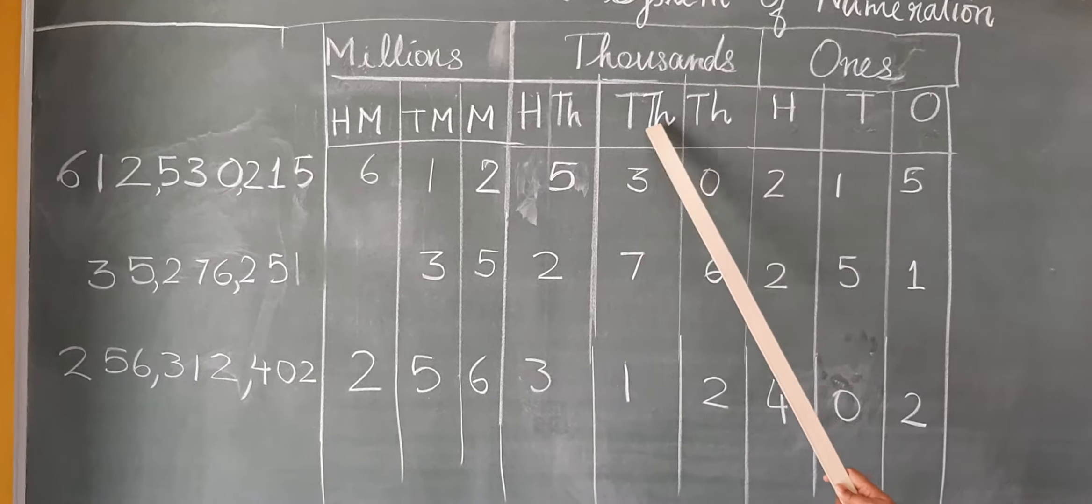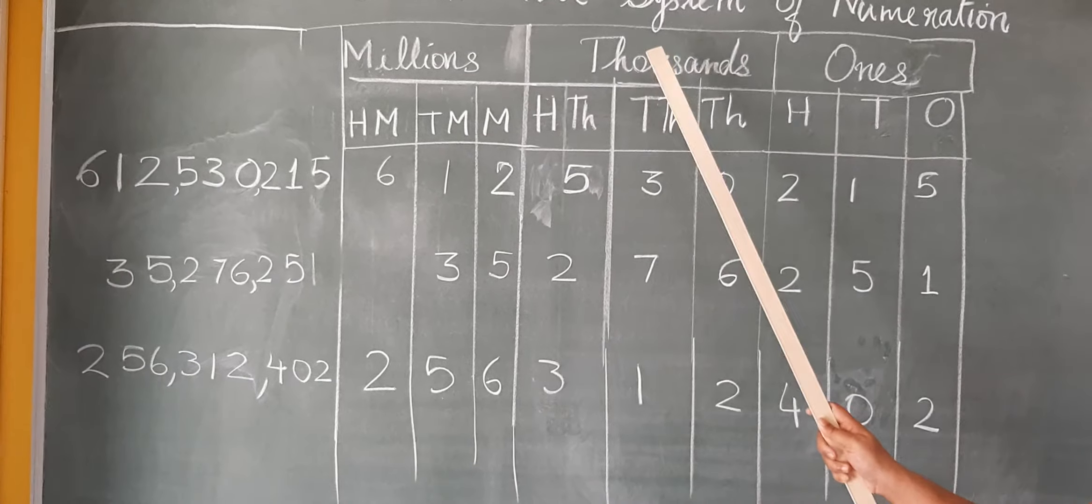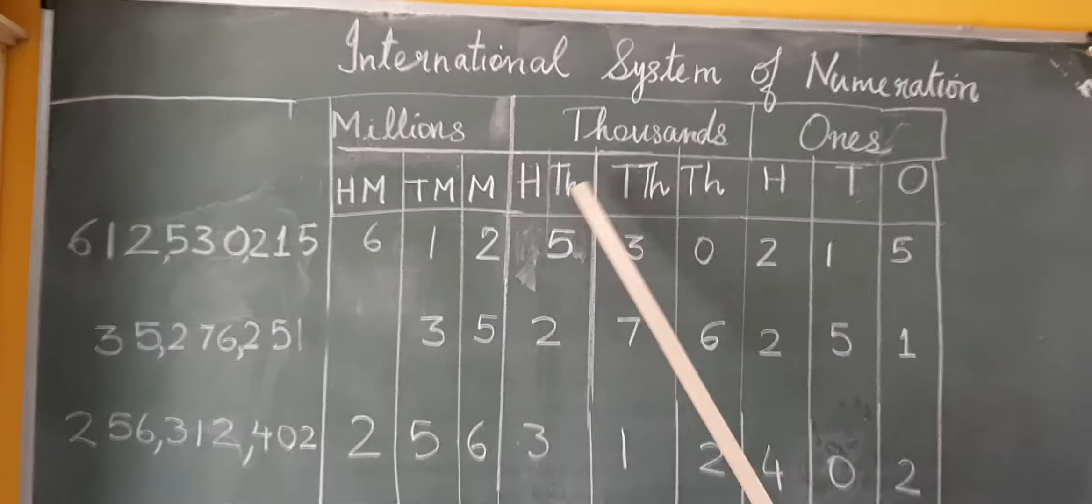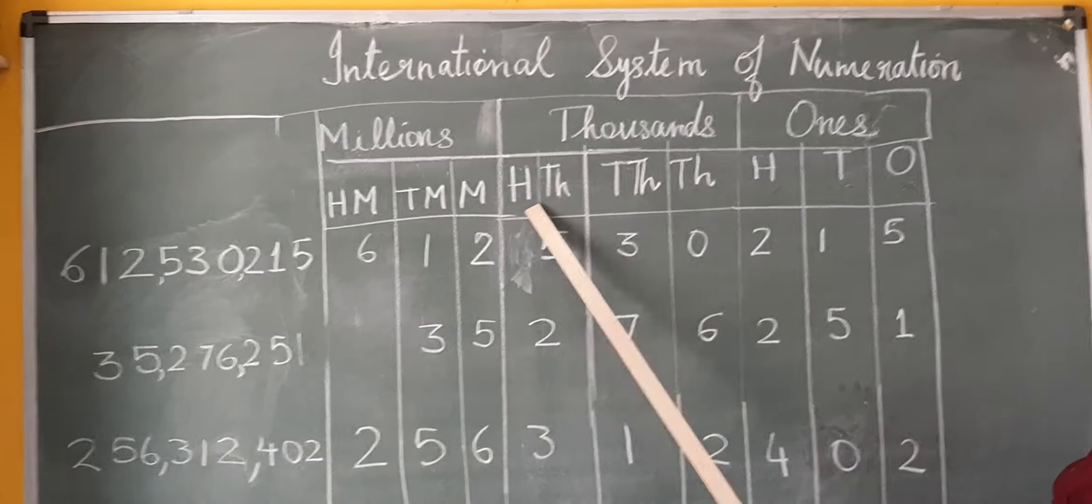So see here: thousands, ten thousands, hundred thousands. In every period, there are three place values: thousands, ten thousands, and hundred thousands.